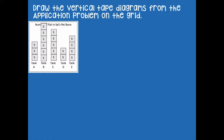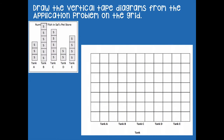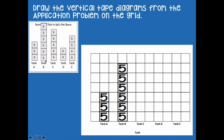We're going to draw the vertical tape diagrams from the application problem on our grid. This is template one — make sure you have your grid that looks just like this one. Tank A has 15, so 5, 10, 15. Tank B has 30, so 5, 10, 15, 20, 25, 30. Continue drawing the rest of your vertical tape diagrams for tanks C, D, and E. Click pause to complete those.